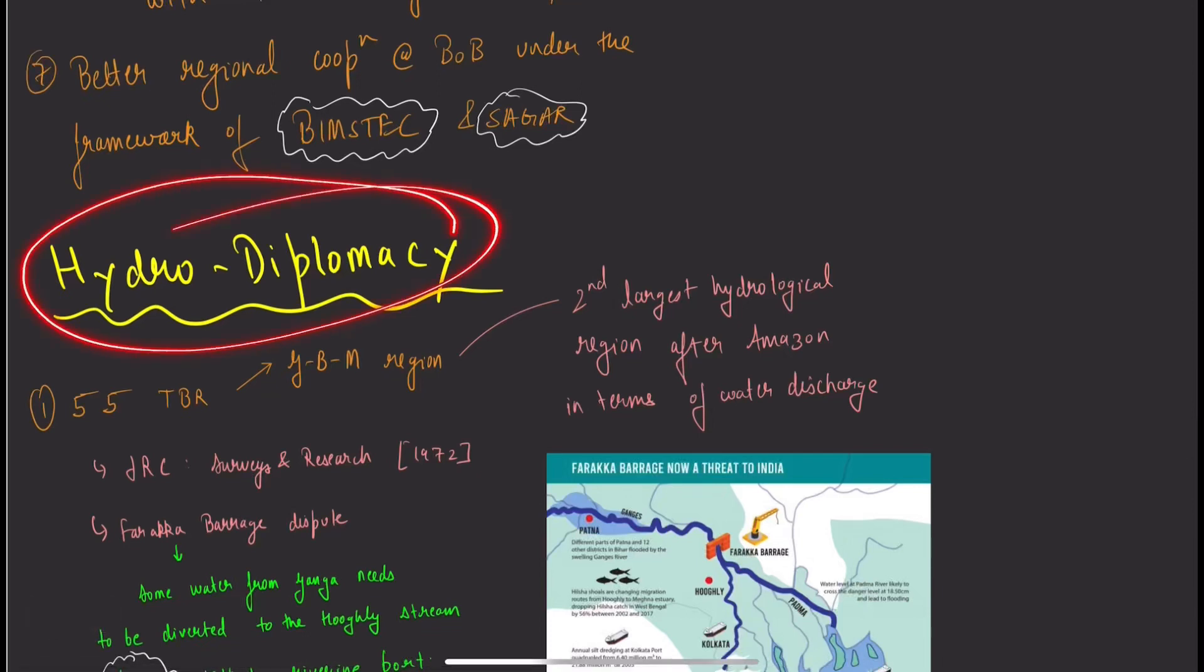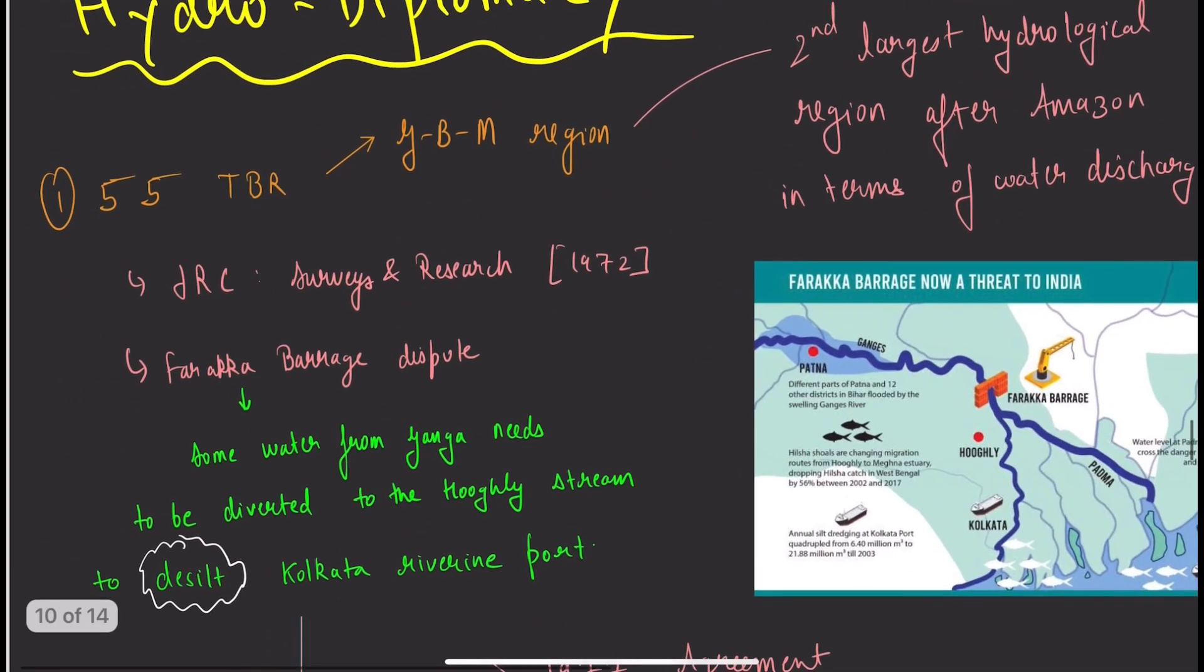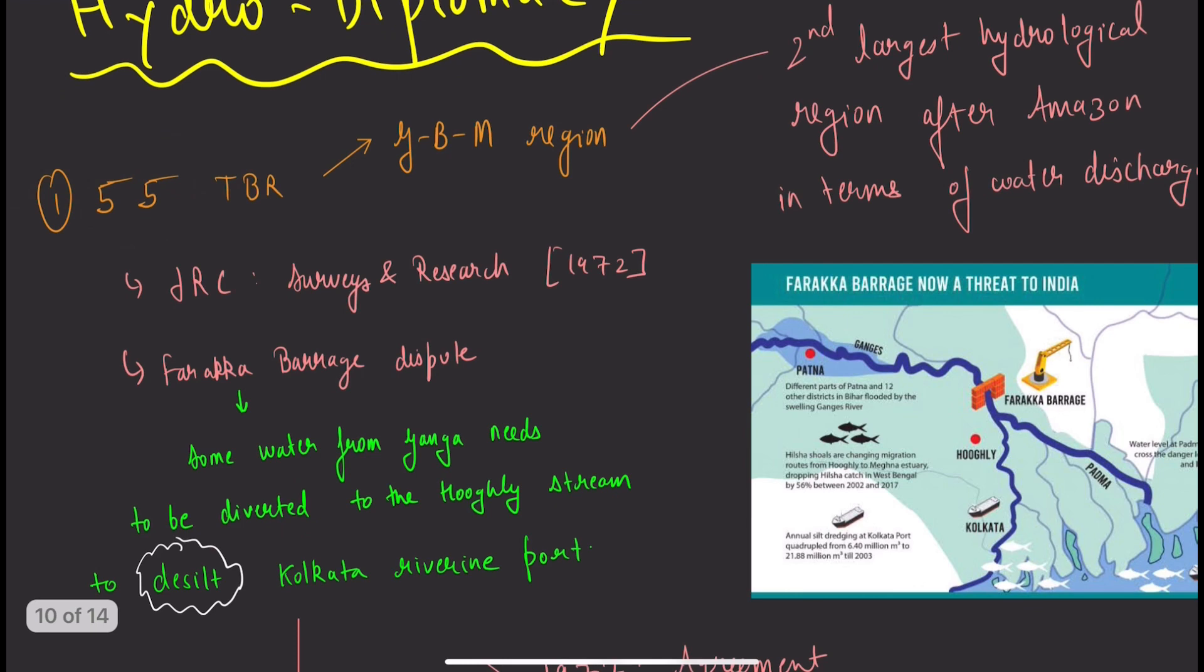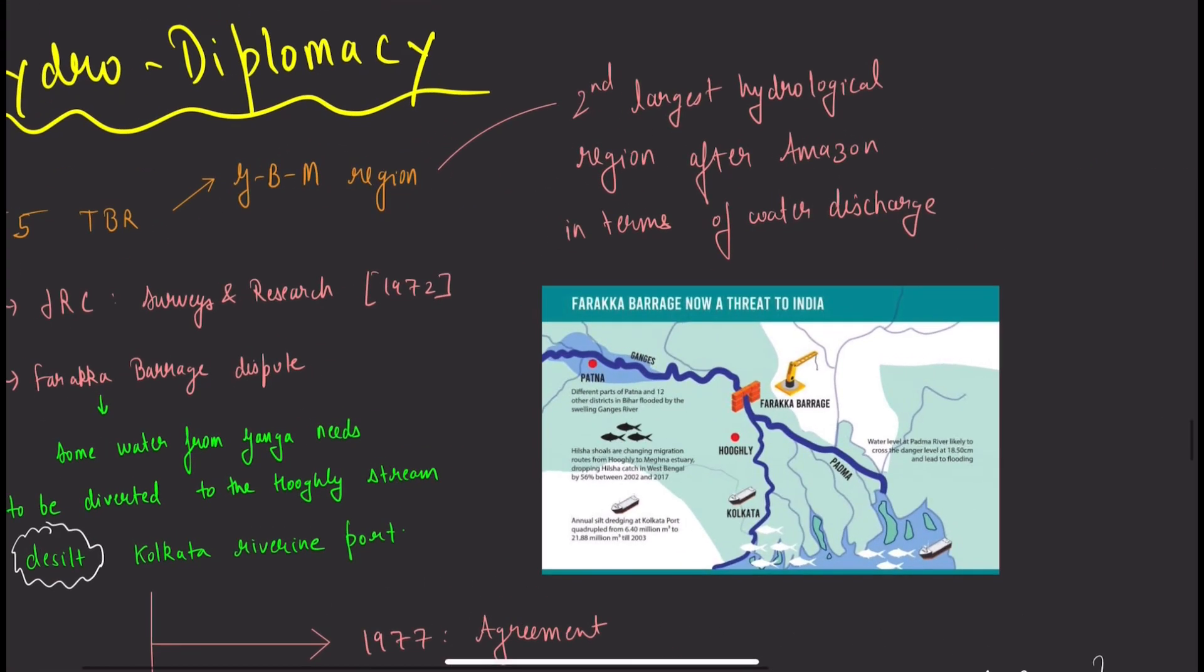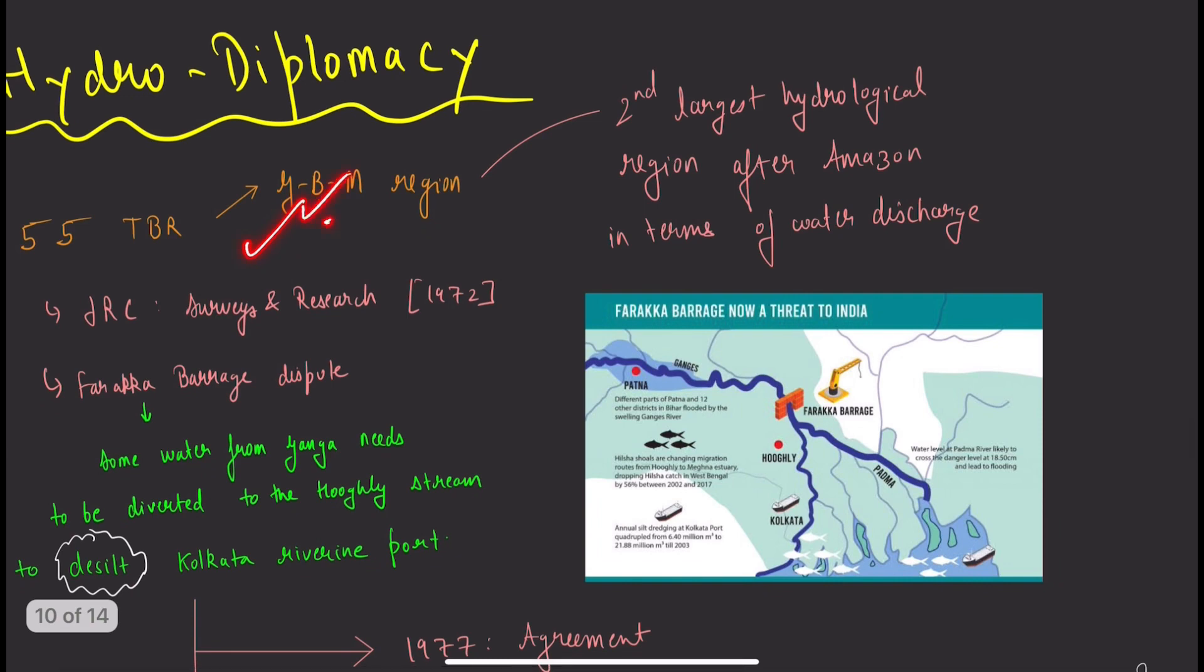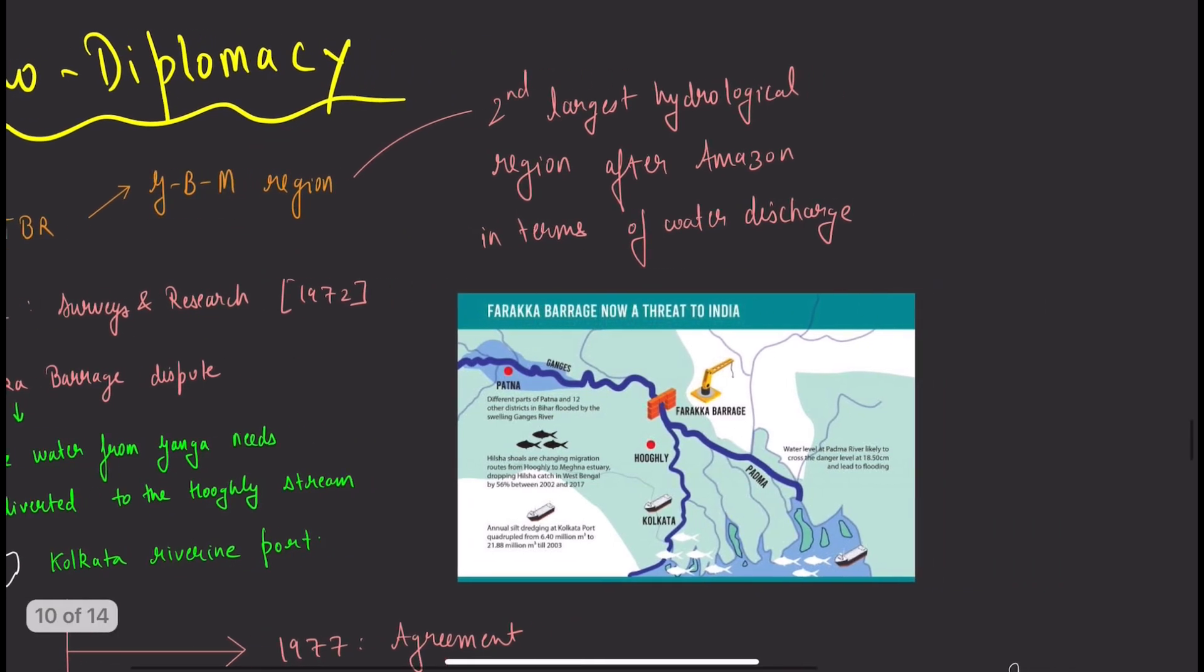Next topic is hydro diplomacy. Hydro diplomacy is simply the diplomacy and dialogue over water-related issues between countries. India has 55 transboundary rivers, more than 50 we are sharing with Bangladesh, especially the Ganga. This is the second largest hydrological region after Amazon in terms of water discharge.